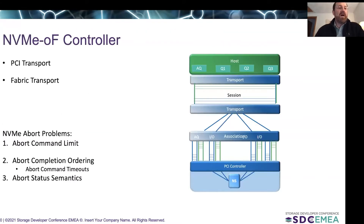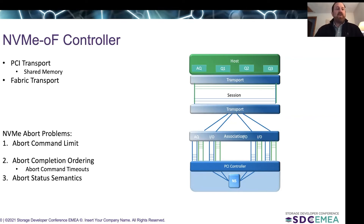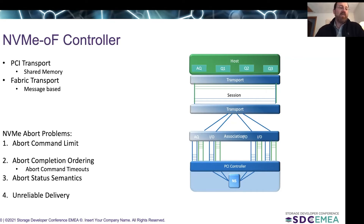In NVMe over fabrics, the problem is even worse. One major difference is that with PCIe we have a shared memory transport, meaning delivery of IO commands, abort commands, and admin commands has no possibility of delivery failure. However, in fabrics, which are message-based protocols, we have an unreliable delivery transport. This means we can have transport timeouts in addition to abort command timeouts, and it's really hard for the host to tell the difference.